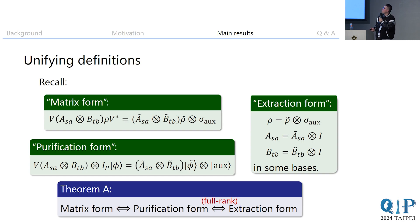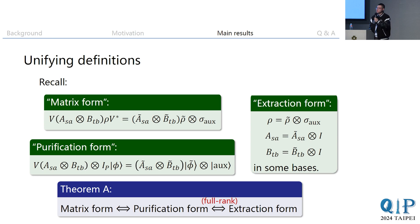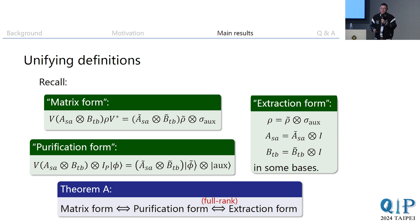Regarding the unifying definition part: we have three forms of definitions for self-testing. Our first main result is that the matrix-form definition and the purification definition are equivalent, and if we only consider full-rank strategies, both are also equivalent to the extraction-form definition. Full rank is the only case that makes sense for the extraction form, because we can't say anything about what happens outside the support of the state.